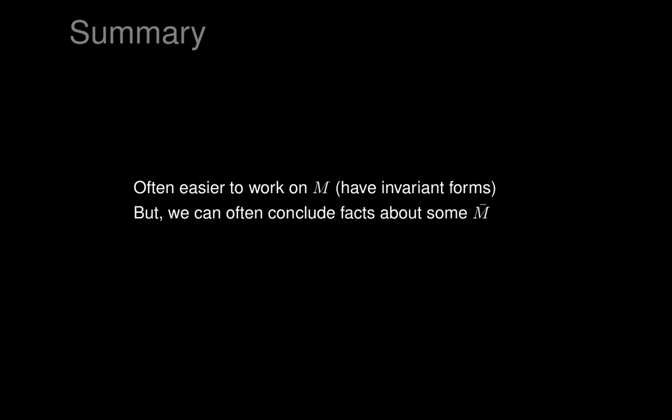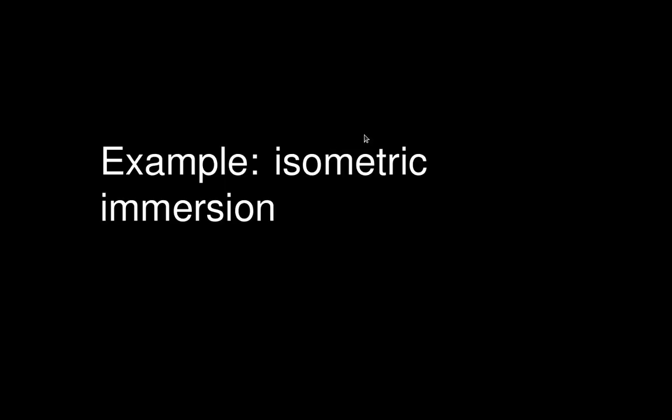Next time we'll apply all of this theory of Cauchy characteristics to a more sophisticated example. We've already talked about surface invariance, but we could look at the specific case of isometric immersion, see how to carry out the construction of M-bar, and also try to understand the geometric interpretation of non-characteristic initial data.